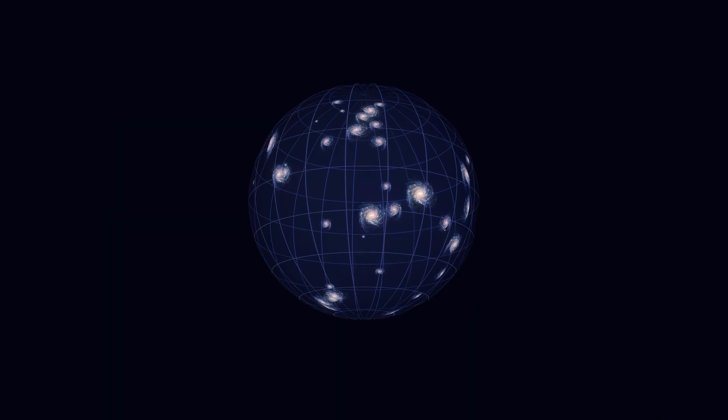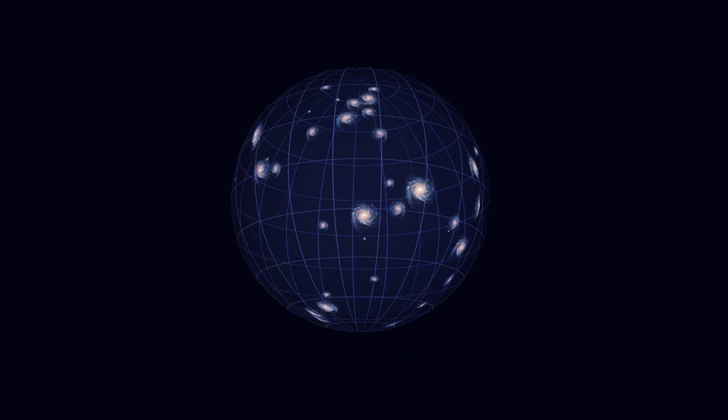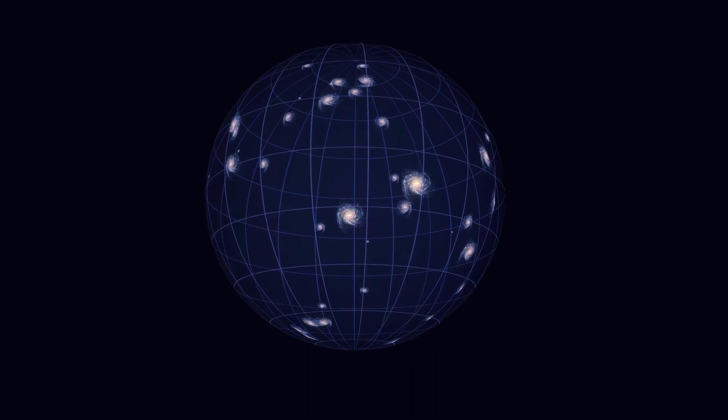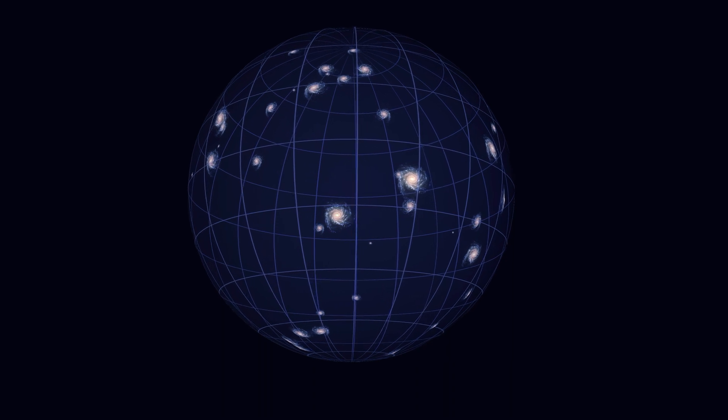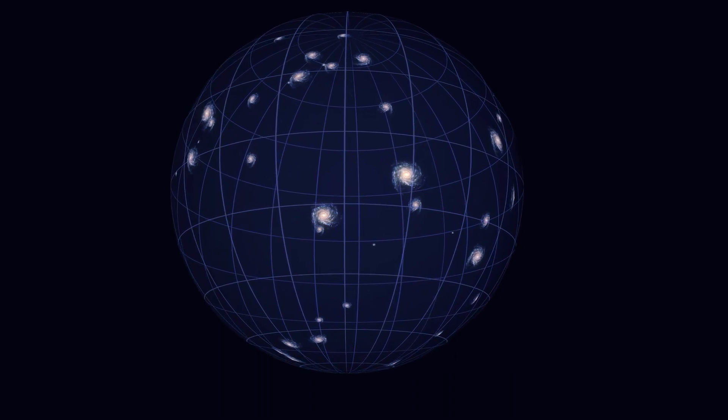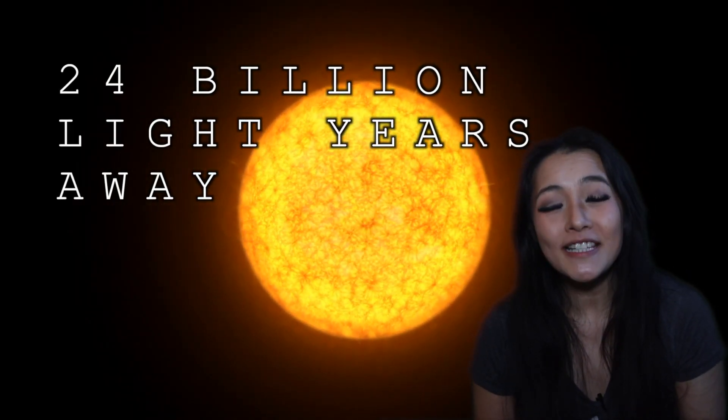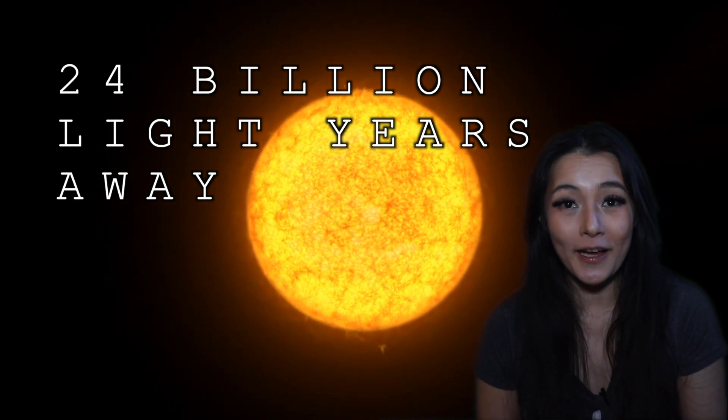Given that a star like our Sun has an average lifespan of about 10 billion years, Earendel might not even be there anymore. Even if it is, remember that the universe is expanding, so the star would have moved a lot farther out from where it was when it emitted that light we're currently seeing. The star is now 24 billion light years away.